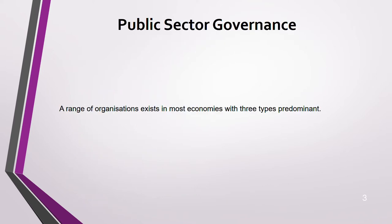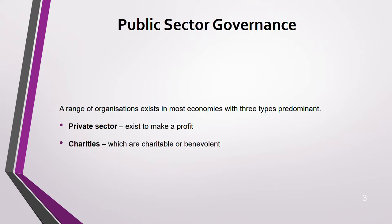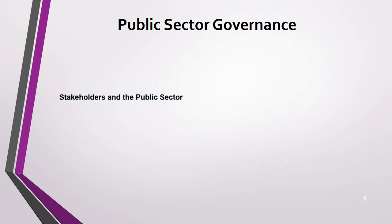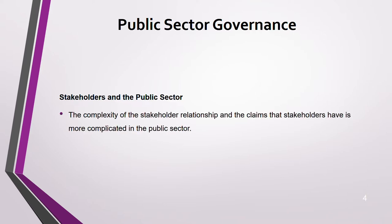Starting with public sector governance — there are three predominant types that exist in most economies. Number one is the private sector, number two is charity, and number three is the public sector. The private sector is profit-driven, charity is for charitable causes, and the public sector delivers goods and services not provided by private profit entities.